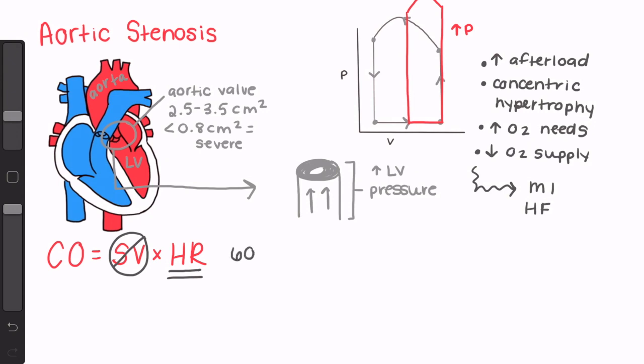This means that maintaining a normal sinus rhythm and a normal atrial kick are critical. Depending on which text you read, our goal heart rate is between 60 and 80 beats per minute. And any arrhythmia should be treated immediately.